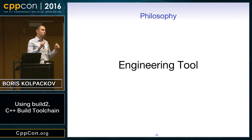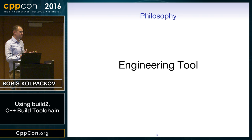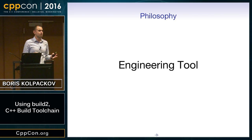I always cringe about that when I read it. We are not trying to build some kind of magic unicorn that will solve all your problems forever. What we want is something like Git — an engineering tool that allows you to get the job done. And if you think Git is some kind of soft warm puppy, then go try to use submodules.